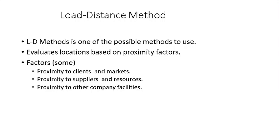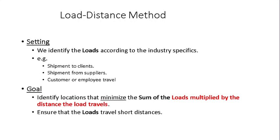And the overall approach is to try to find out some factors that influence our decision. The factors could be the proximity that we need to have with our clients and markets, the proximity to suppliers and resources, or some other company facilities. So all those factors affect how fast our load will reach our clients. We identify in every industry the load as a number.